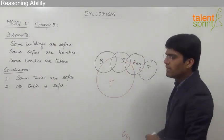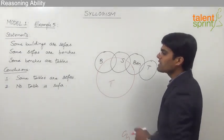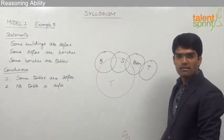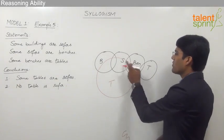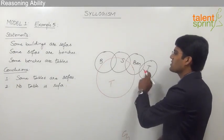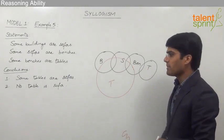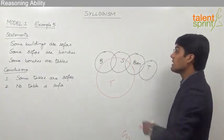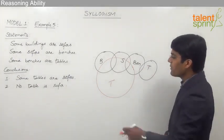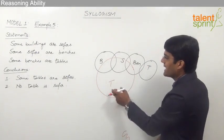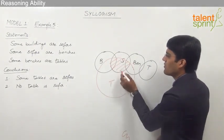Now let us see which conclusions are true. The first conclusion is 'some tables are sofas'. In the basic diagram, tables and sofas are disjoint from each other — they do not overlap — so 'some tables are sofas' does not follow. But in the second diagram, some tables are definitely sofas, so conclusion one is true in the second diagram.